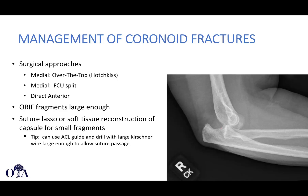For suture lasso technique: looking here, the fracture base is here and the fragment is here. You make drill holes from the dorsal ulna into the fracture base — you can use a guide like an ACL drill guide to target these accurately. Once you have two holes at the base of the fracture, you put sutures in the capsule or attachments of the fragment, use a suture retriever to come through, grasp the sutures, and then pull these two sutures out and tie them on the dorsal surface of the ulna. Pulling down and tightening gives you that suture repair.